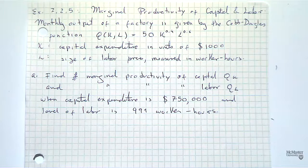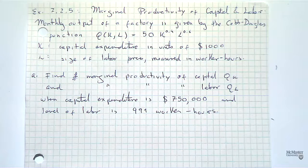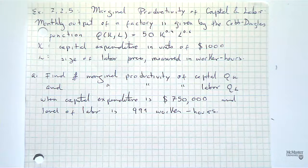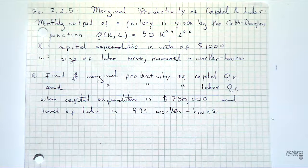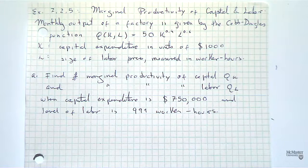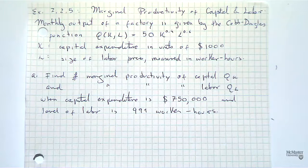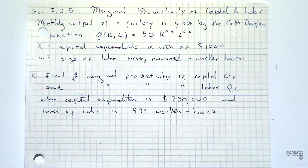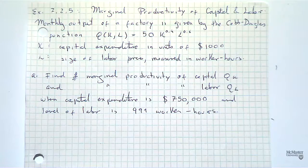Okay, so let's continue where we left off. The last two minutes of last lecture were spent on writing the statement of problem 7.2.5, which is related to marginal productivity of capital and labor. You're given a function of the output of the factory, Q, which depends on two quantities, K and L.